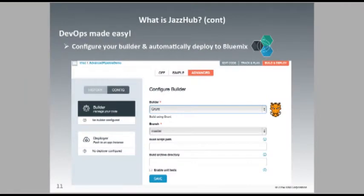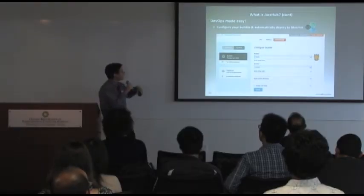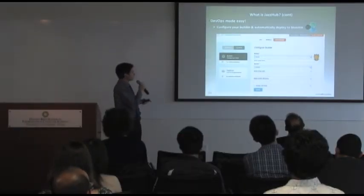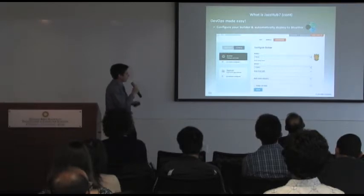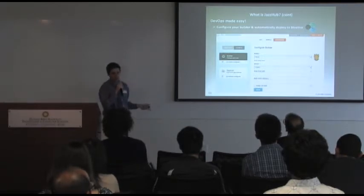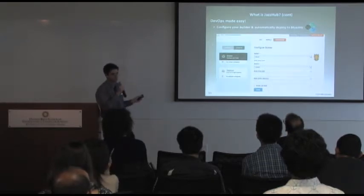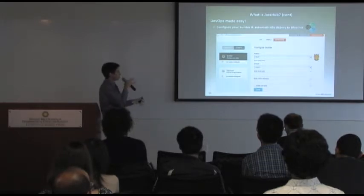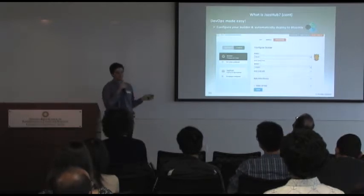Going through the documentation for the track-and-plan feature on JazzHub increased my knowledge of Agile tremendously, and that turned out to be a huge factor in me getting the internship — having knowledge of Agile development, because in an actual business, that's how development is going to happen. You can also configure your builder — I use Grunt — and when you build and push to Bluemix, it automatically runs all your test scripts, builds your code, and generates logs if there are errors.